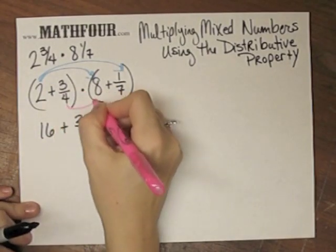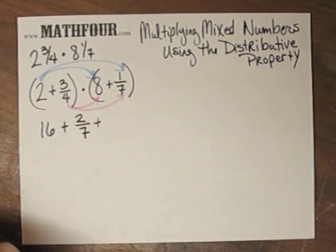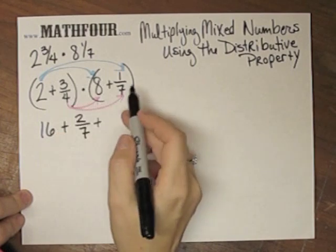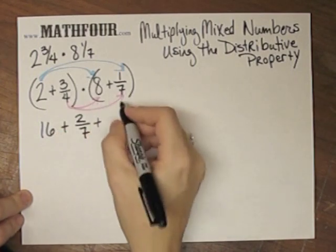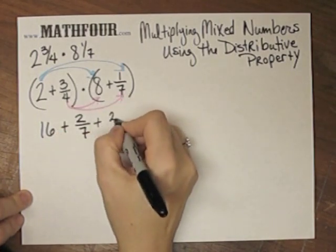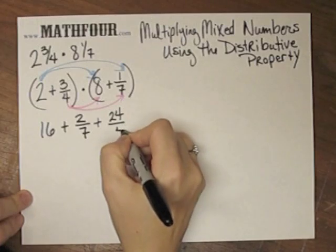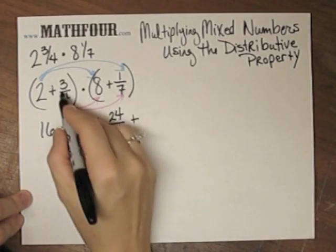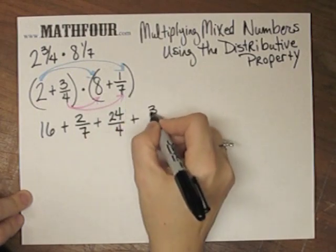Going for the bottom parts: 8 times 3 fourths. We can cancel or just leave it the way it is. 8 times 3 is 24 over 4. And then 3 fourths times 1 seventh is 3 over 28.